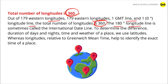To determine the difference, duration of days and nights, time and weather of a place, we use latitudes, whereas longitudes relative to Greenwich Mean Time help to identify the exact time of a place.